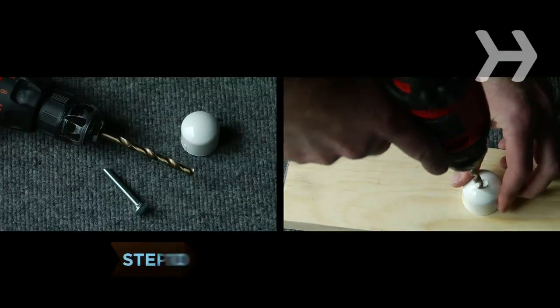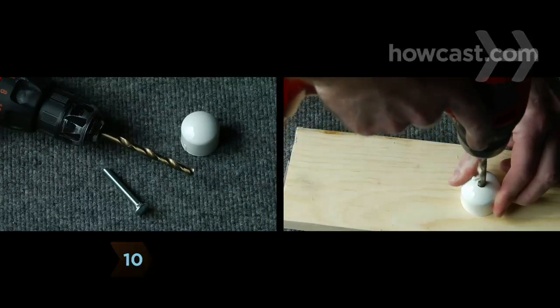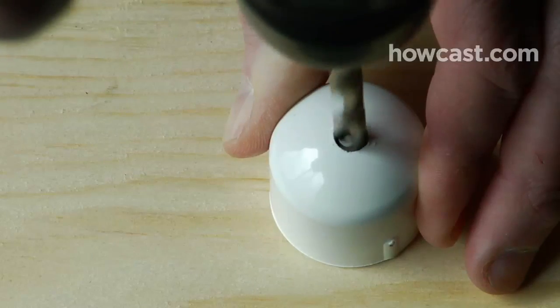Step 10. Create the camera mount. To begin, drill a hole the size of a bolt through the center of a PVC end cap.